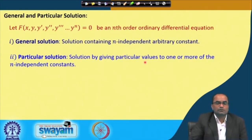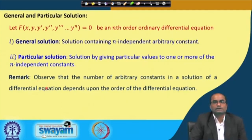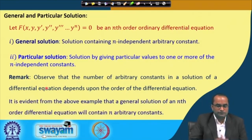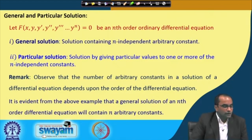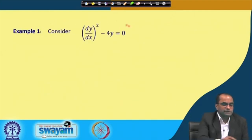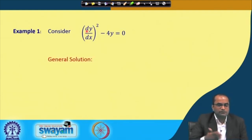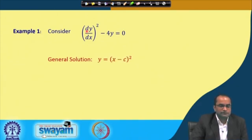The number of arbitrary constants in a solution of a differential equation depends on the order of the differential equation. As seen through examples, a general solution of nth order contains n arbitrary constants. Let us go through the examples. We have the differential equation (dy/dx)² - 4y = 0. Its general solution is y = (x - c)², which we are provided here rather than deriving it, as the solution techniques will be discussed in the next lecture.